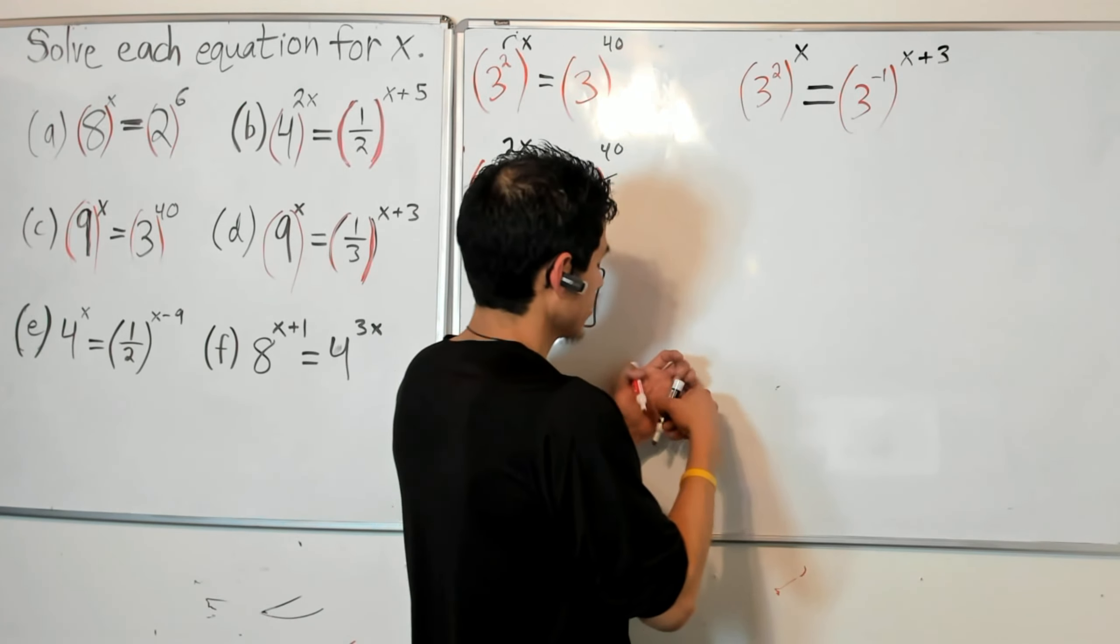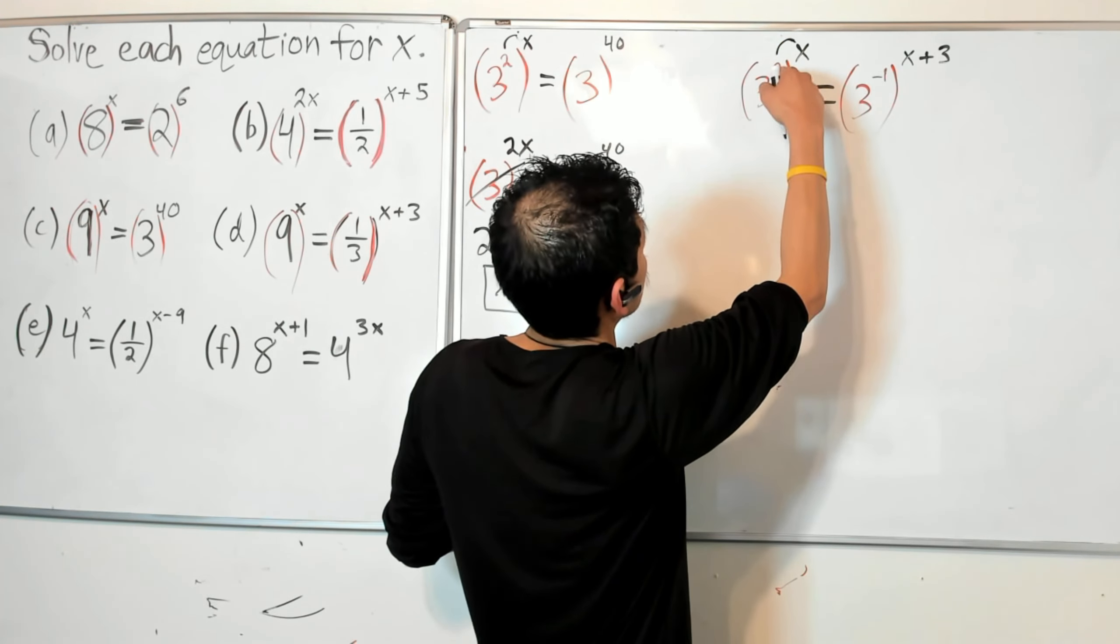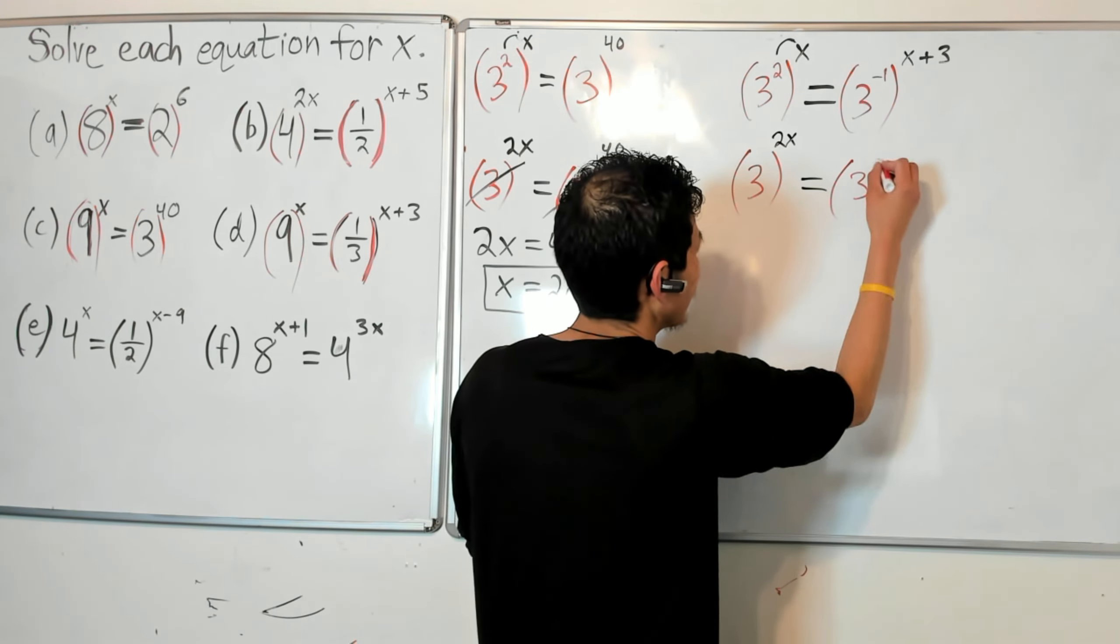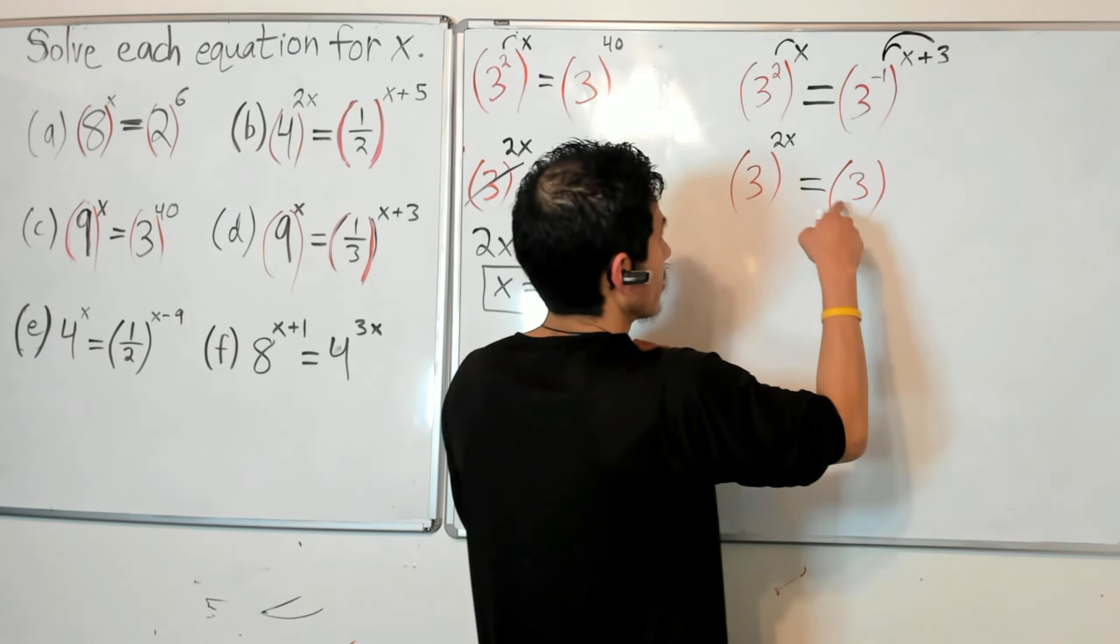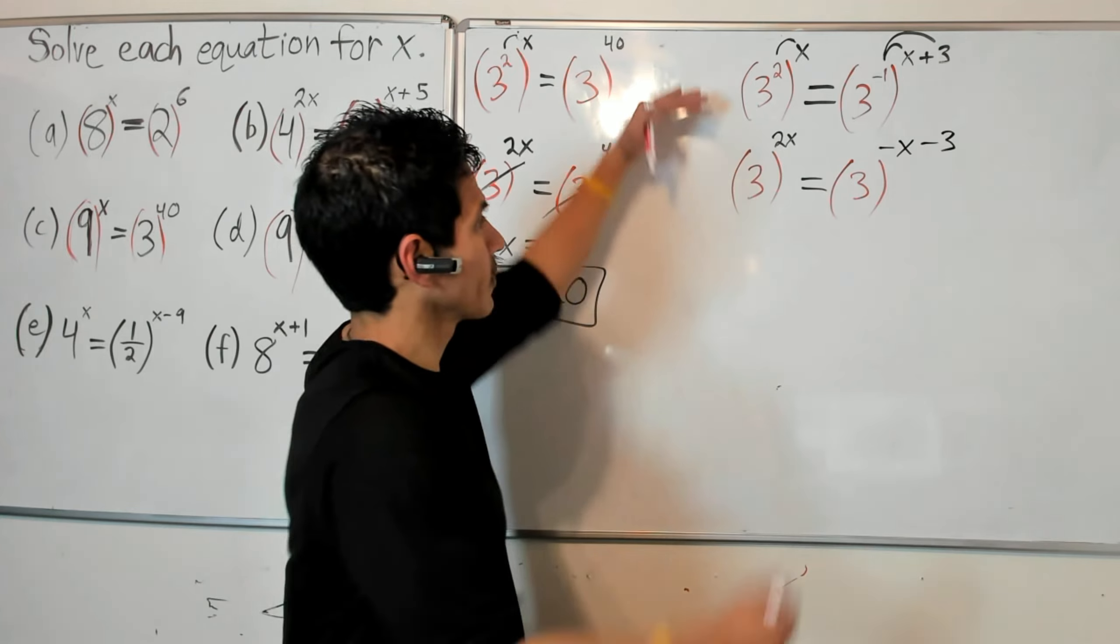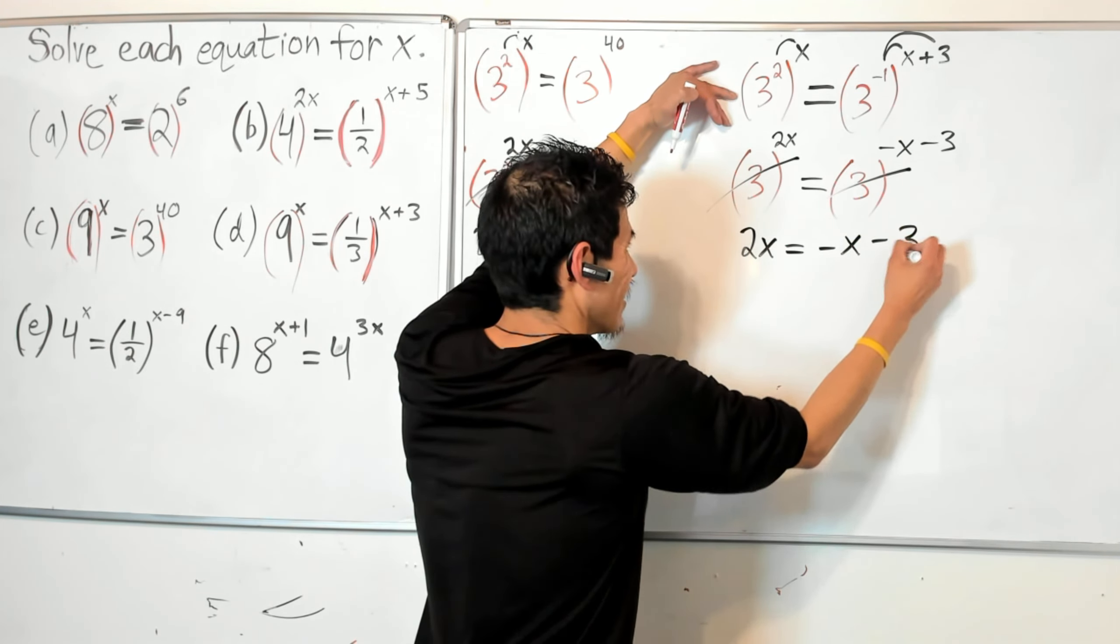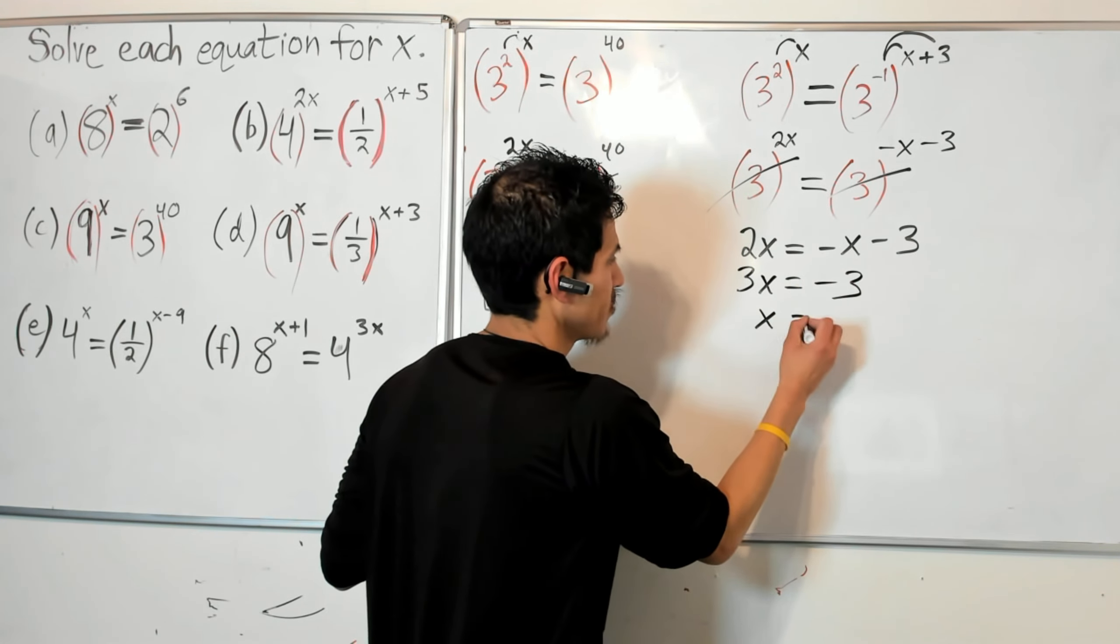That's to the x, this is to the x plus 3. So I have 3 to the 2x. And now that my bases are isolated, I set 2x equals negative x minus 3. Solve for x. Add 3, and x will be negative 1.